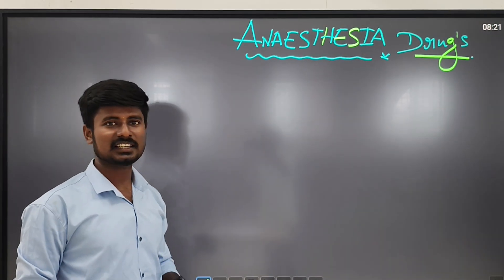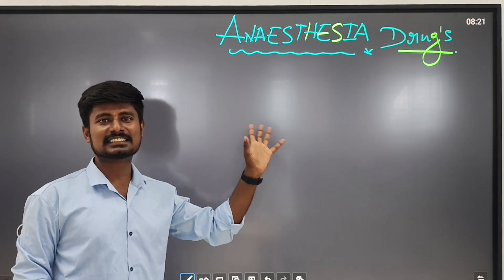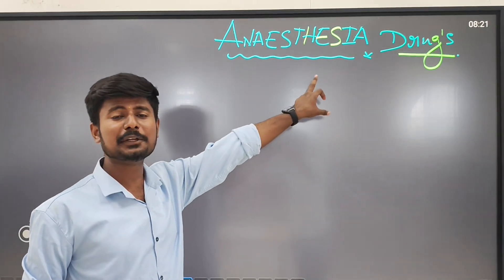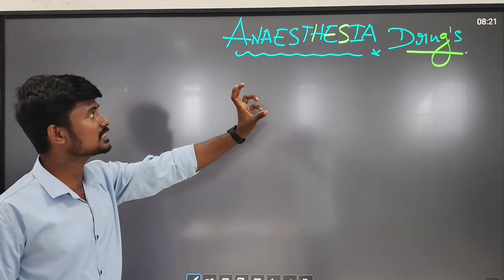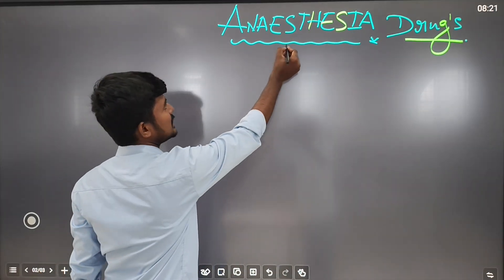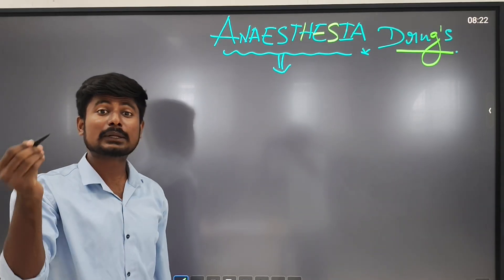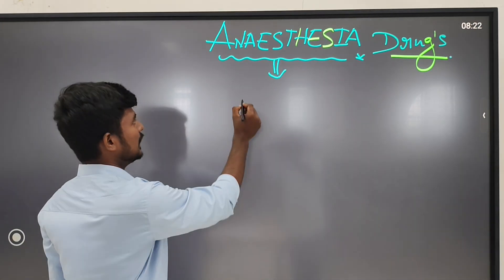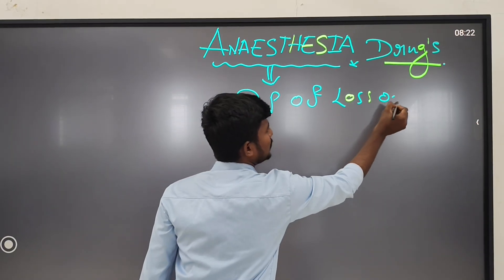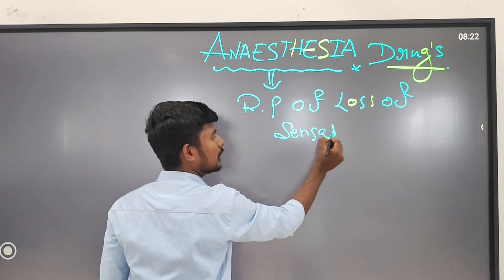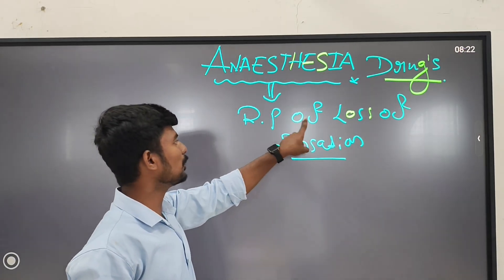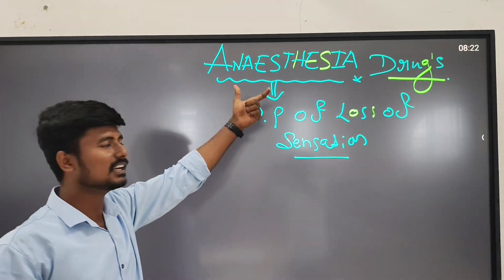Today we have discussed about the anesthesia drugs. In the previous class we covered sedatives and hypnotics which act on the nervous system. Anesthesia drugs are very important drugs for clinical purposes. Anesthesia is defined as a reversible, temporary loss of sensation.